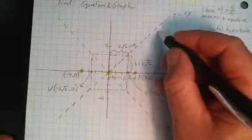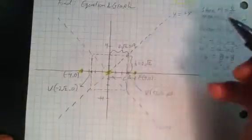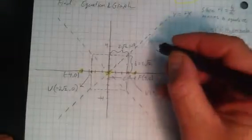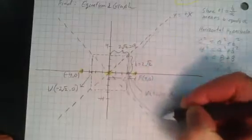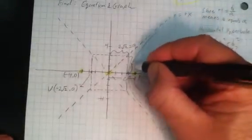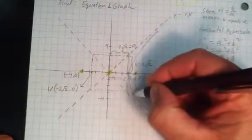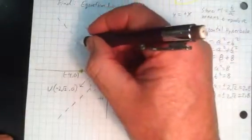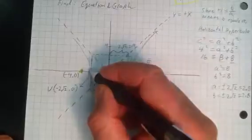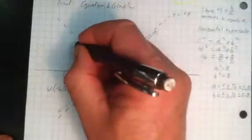And then my graph, then horizontal orientation is going to come through, hit that vertex, and come through asymptotically like this. And the same way on the other side.